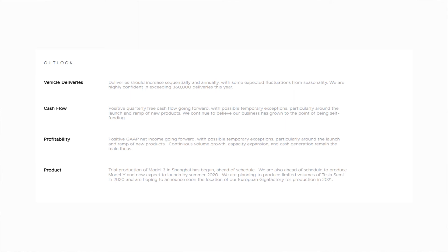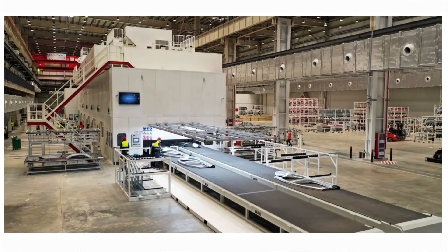Then going forward it talks about the Model Y which we said is going to be in 2020, limited volumes of the Tesla Semi truck which will be in 2020 as well, and the European Gigafactory will be in production for 2021 which will be pretty cool. There are also some pretty cool photos. Go check them out guys, it's on the investor relations page of the actual Gigafactory in Shanghai and that's absolutely amazing to see that conveyor belt in 2019.